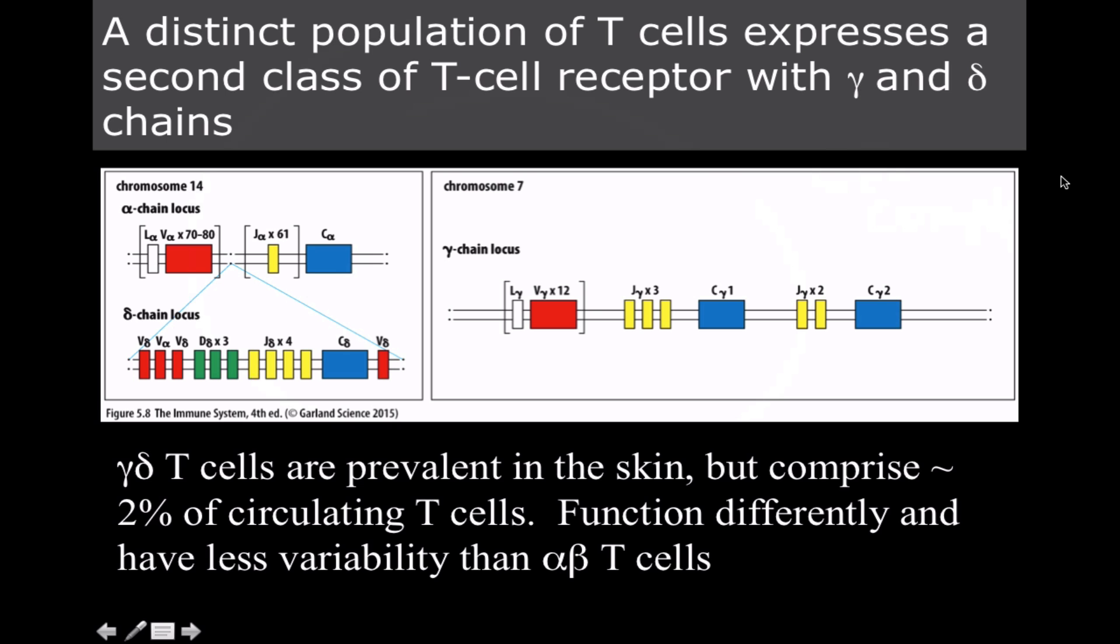A small population of T-cells express another type of T-cell receptors known as gamma and delta chains. We don't fully understand the function of these. These tend to be a little bit more conserved than what we see with the alpha and beta.